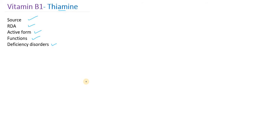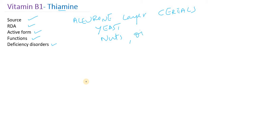Vitamin B1 or thiamine is rich in the outer cover of the cereals, also called the aleurone layer of cereals. A very good source is yeast, and we can also find thiamine in nuts, oil seeds, meat, egg, and fish. These are some of the good sources of vitamin B1 or thiamine.